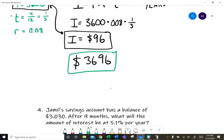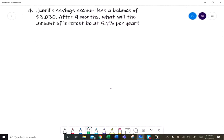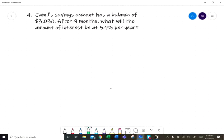One more. Let's do one more of these. Jamil's savings account has a balance of $3030 after nine months. What will the amount of interest be at 5.1% per year?